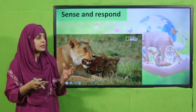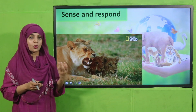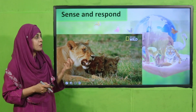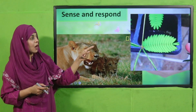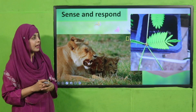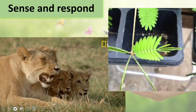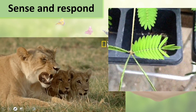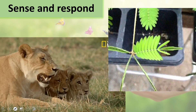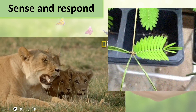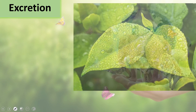Both plants and animals sense and respond to their surroundings. Plants also respond — for example, this is a touch-me-not plant. If you touch it, you can see how the leaves close in. As you touch it with your finger, the leaves close. This is a mimosa plant, also called the touch-me-not plant. Animals and plants both respond to their surroundings.